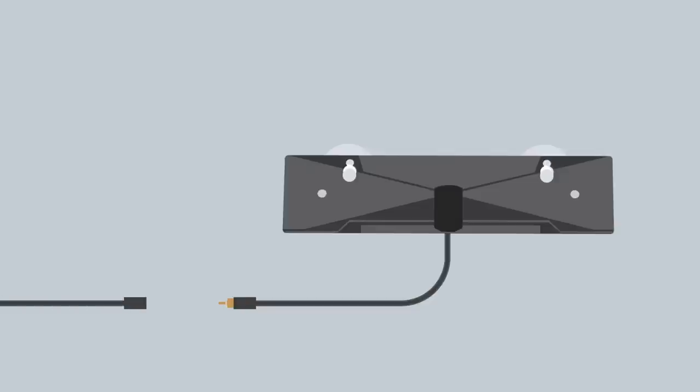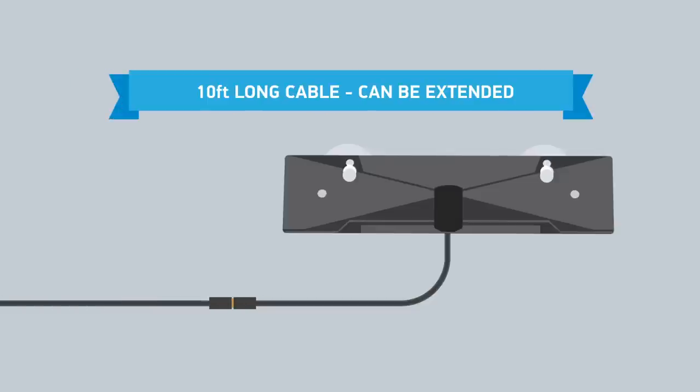The length of the antenna's coaxial cable is 10 feet and can be extended with the use of an aerial extension cable.